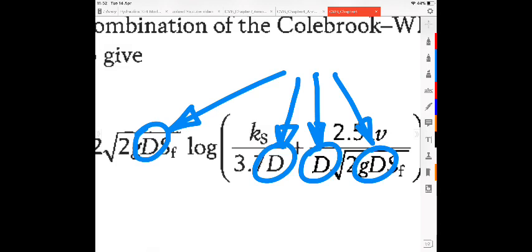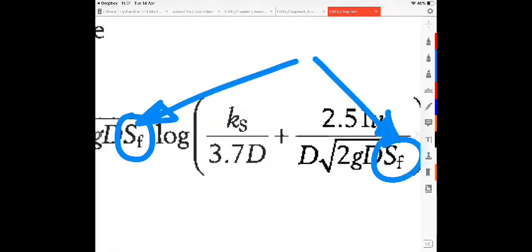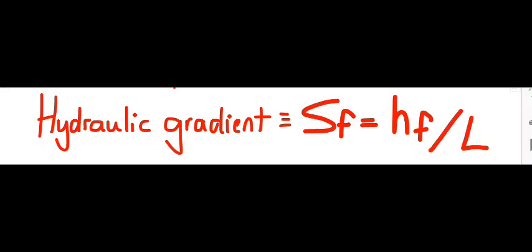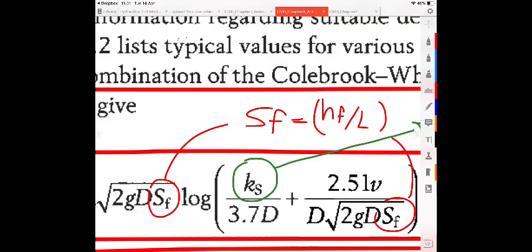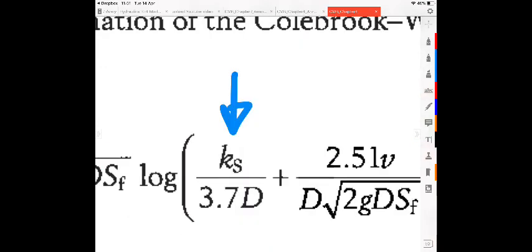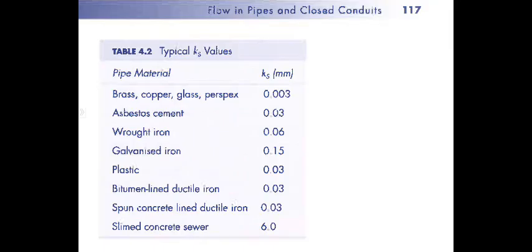Including pipe diameter d in meters, the hydraulic gradient sf equal to hf over pipe length l, the absolute pipe roughness ks in meters that could be obtained from different tables such as table 4.2 in your textbook.